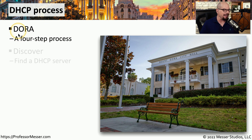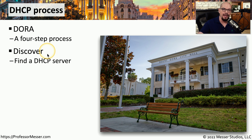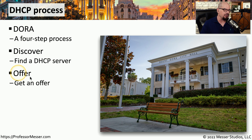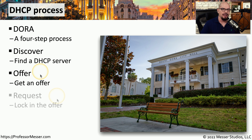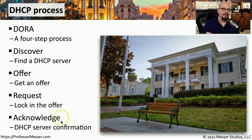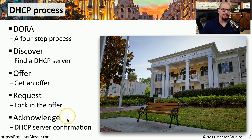The first step is D, or Discover, where our device tries to locate a DHCP server on our local network. The next step, O, is Offer, where a DHCP server will offer an IP address to our device. Our device will then look at the offers it receives, pick one, and Request that IP address from the offering DHCP server. Finally, the DHCP server will Acknowledge that request and provide the system with all of the IP configuration settings it needs.